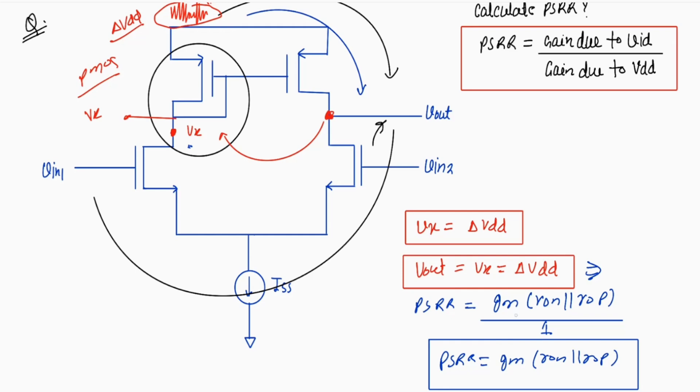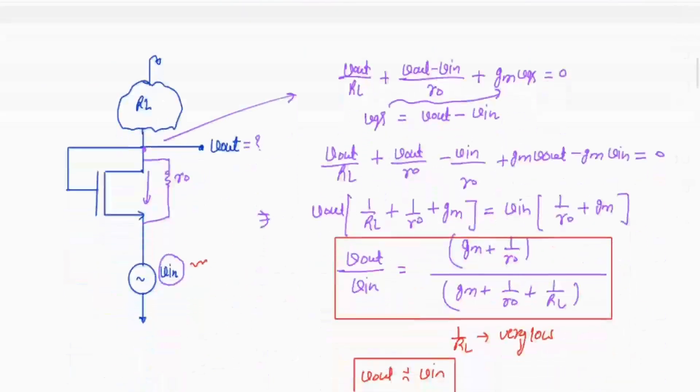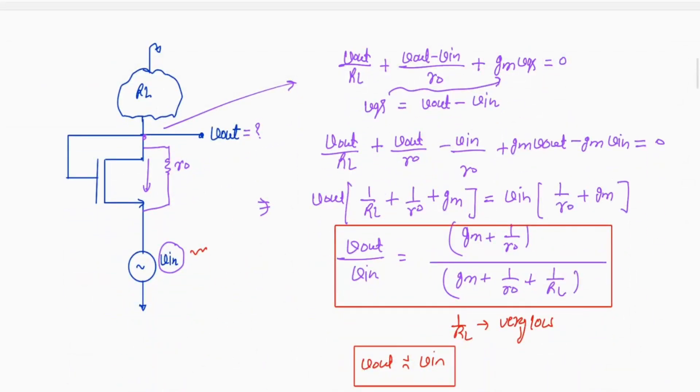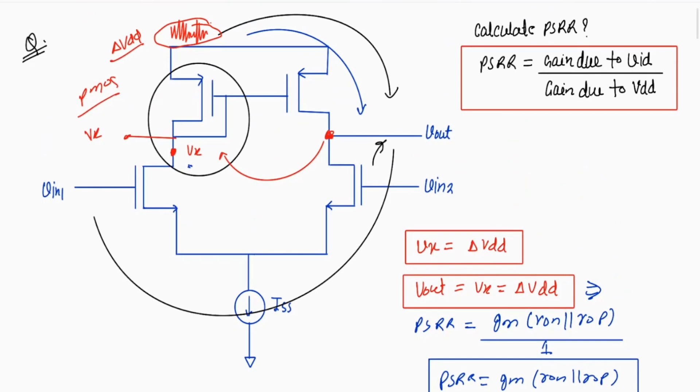So again let's summarize. This one is a diode connected device and if we are varying its source voltage, that variation will be directly transferred to the drain voltage. And we know that in 5T OTA that output terminal follows this low impedance node. So from here we saw that our PSRR will be gm into ron parallel ROP.